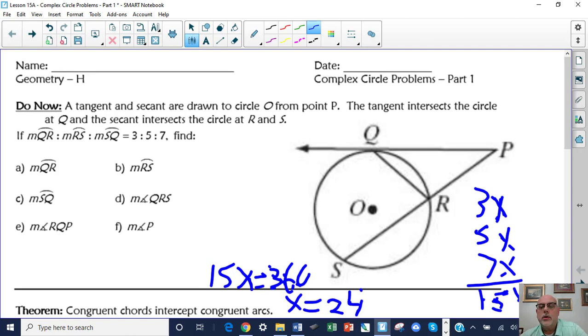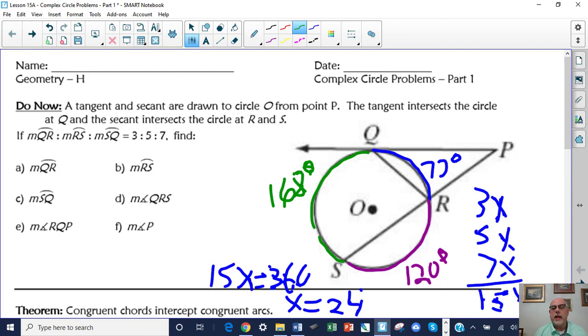So arc QR was your 3x. 3 times 24 is 72. SR was the 5x, that makes that 120. And QS was the 7x, which is 168 degrees. When you're working with complex circle problems like these, you've got to fill in all the gaps. You have to figure out what all the arcs are, because the arcs are going to help you figure out all the angle measures. So that's important.